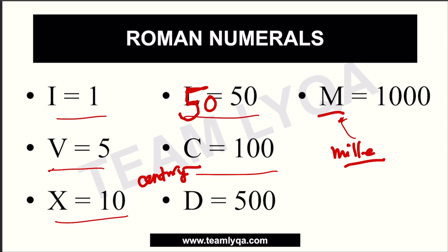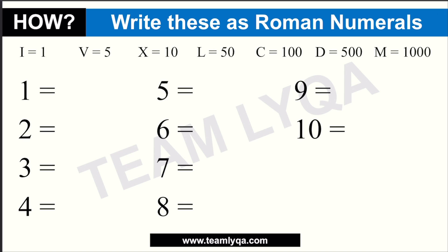There are certain rules when it comes to Roman numerals and how to write them. We're going to write the first 10 numbers — 1 to 10 — as Roman numerals. So 1 is one I, 2 is two I's, 3 is three I's. Then 4 is where it gets a little bit tricky, because you can't write four I's. The rule is a maximum of three in a row.